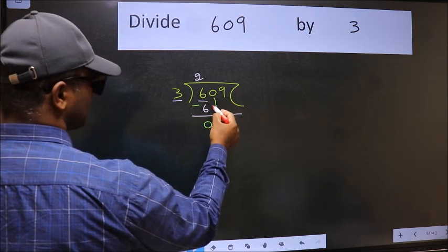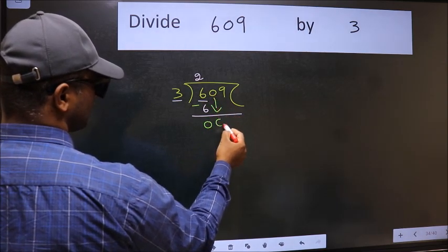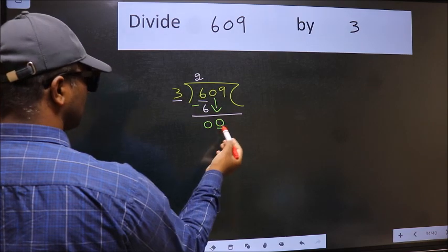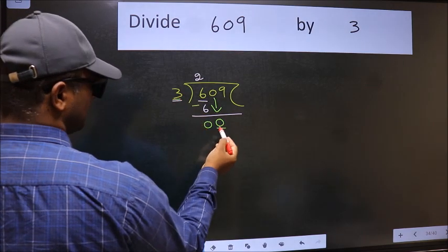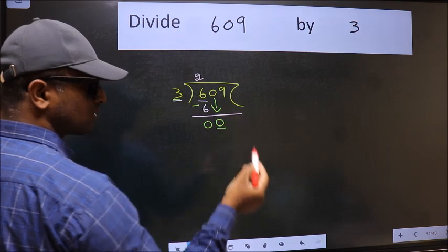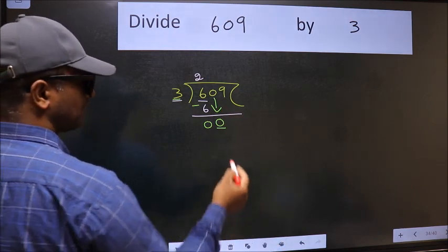After this, bring down the beside number. So 0 down. Now here we have 0 and here 3. 0 is smaller than 3. So we should bring down the second number.